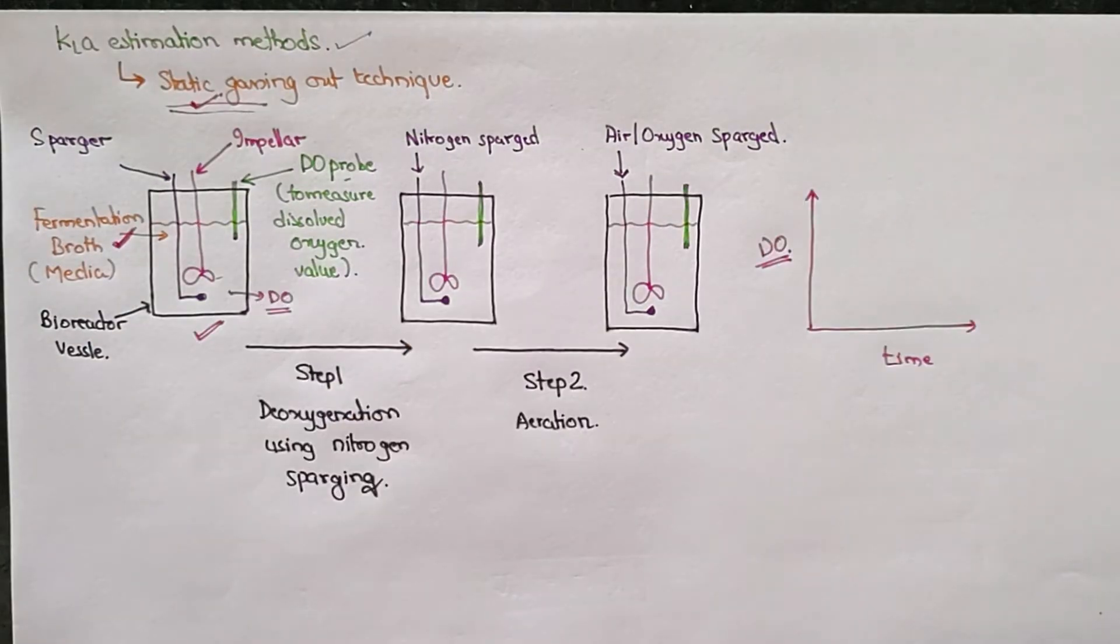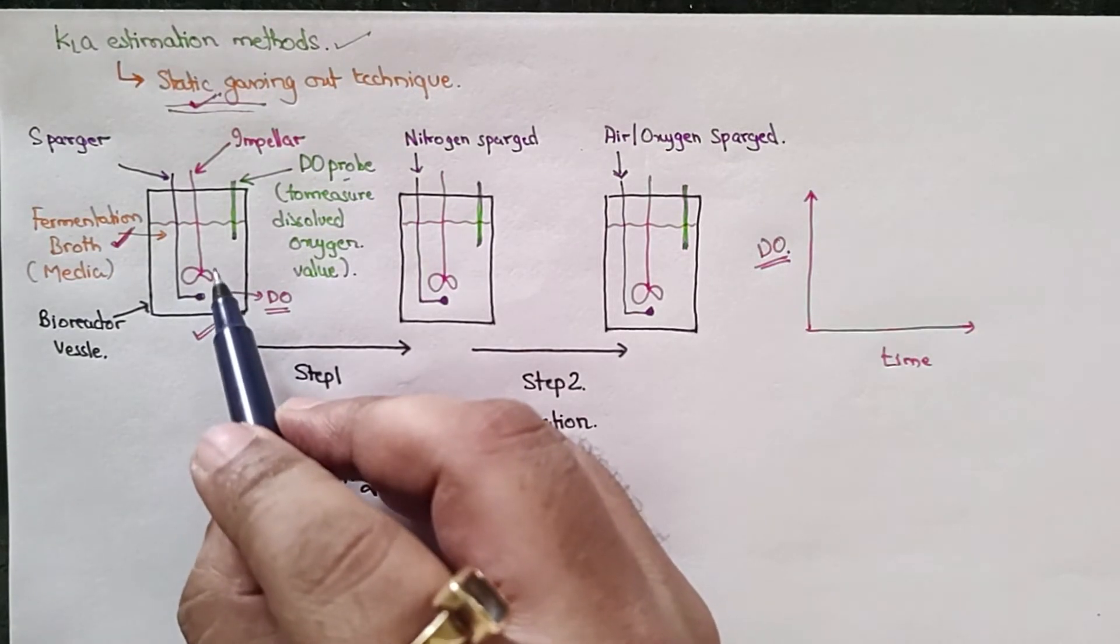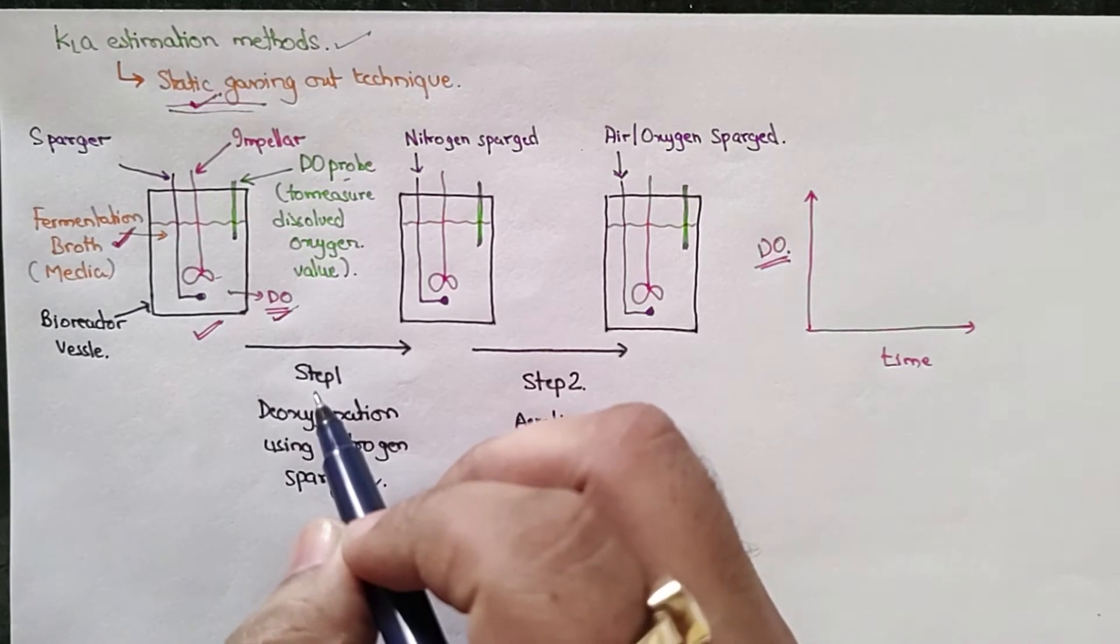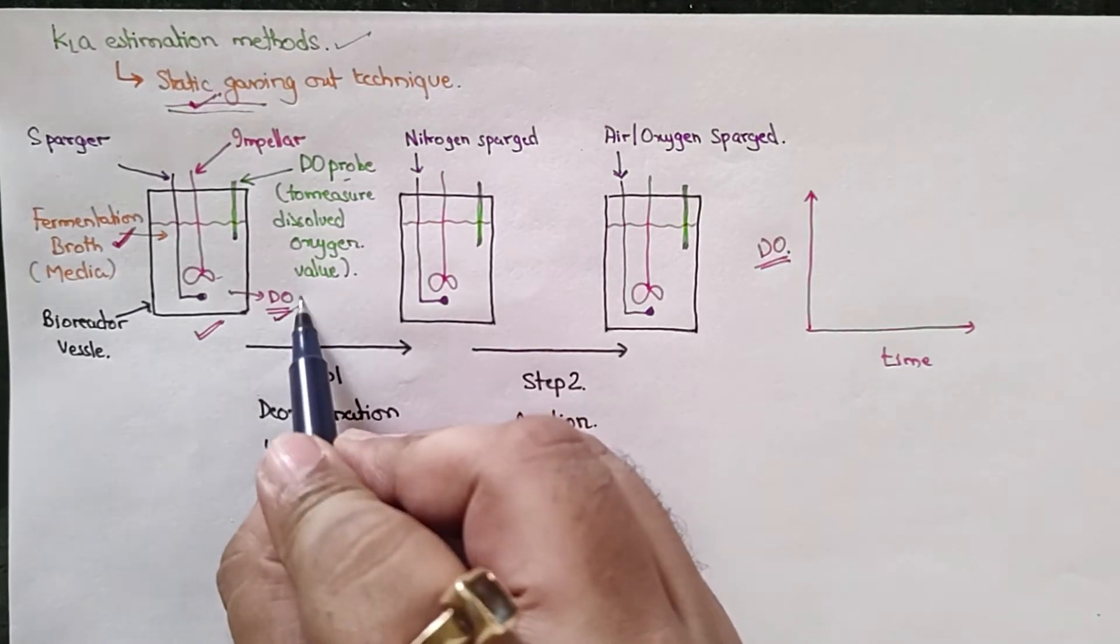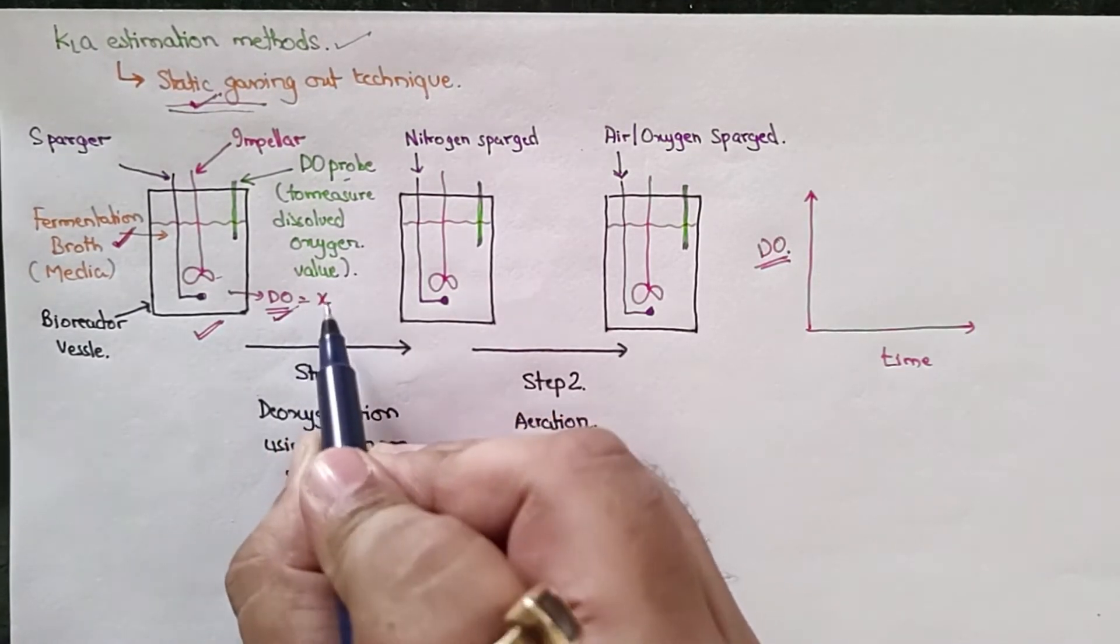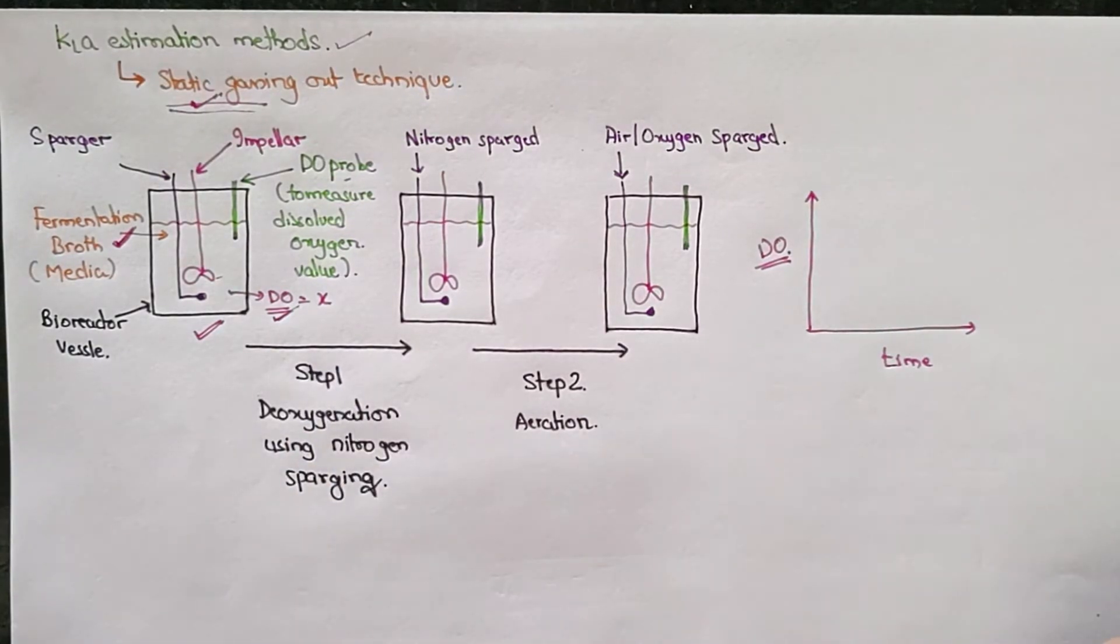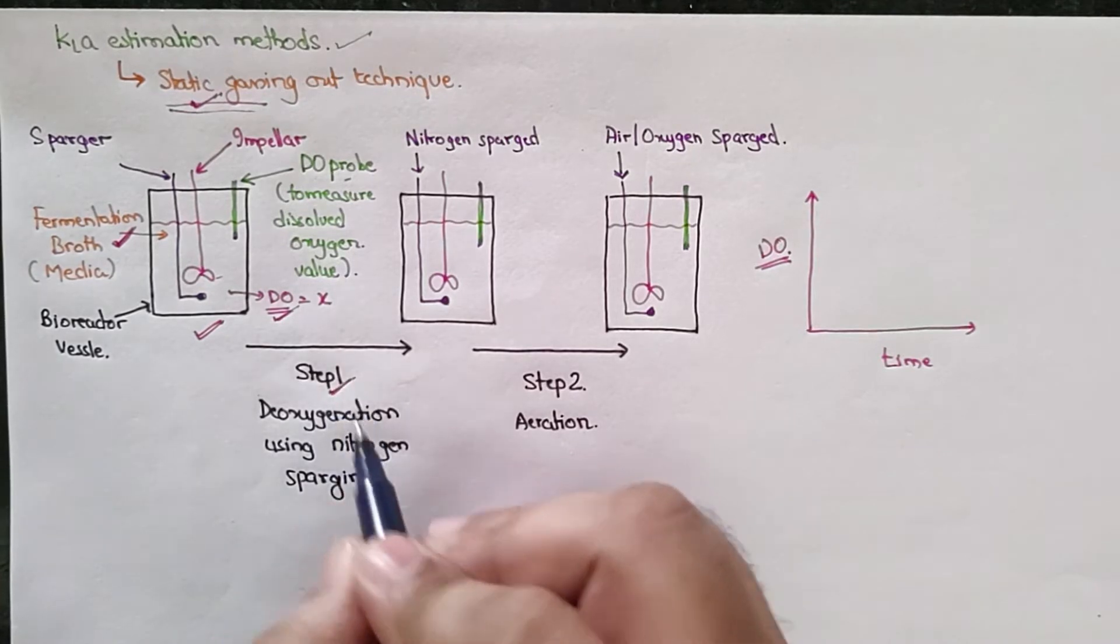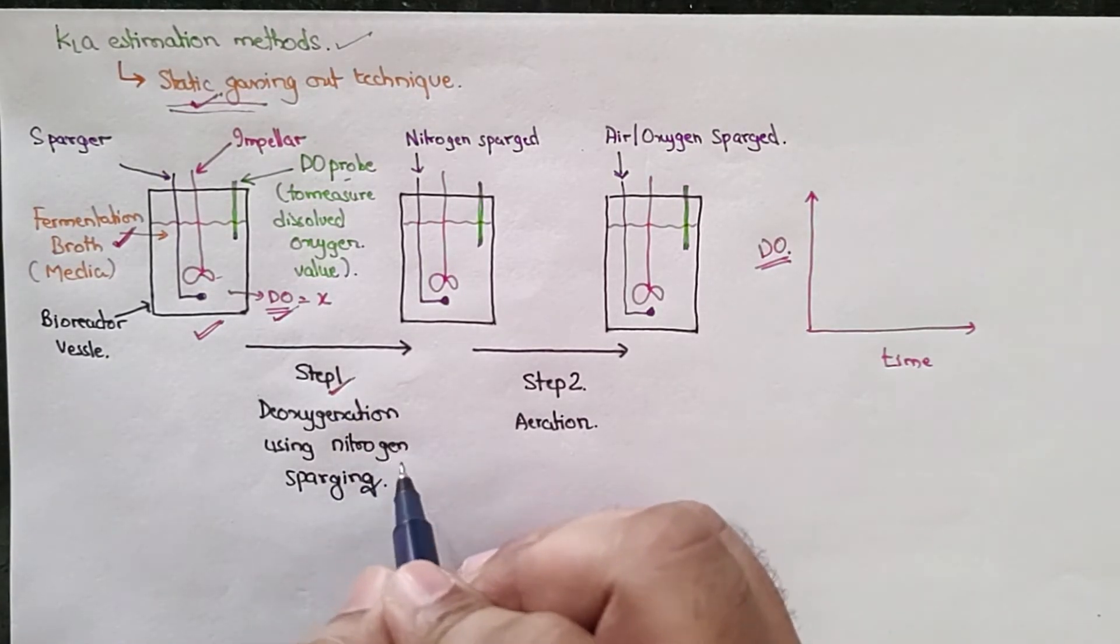This is a fermentation broth, and in any kind of media there can be a certain degree of dissolved oxygen. Let's suppose it has dissolved oxygen of something X ppm. Now, you follow step one. In this step one, you have to remove or deoxygenate this media, this fermentation broth, completely.